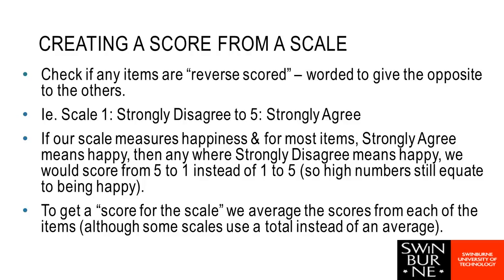The last thing we want to know about with multi-item scales is creating a score for the scale. The whole idea is we're trying to measure some sort of perception, attitude, or underlying trait, and each item within the scale will have a score — maybe 1 through 5 for strongly disagree to strongly agree. We want to combine all of these individual scores into a single score, such as a score for depression or for importance of safety when buying a car. First, we check for any items that are what we call reverse scored.